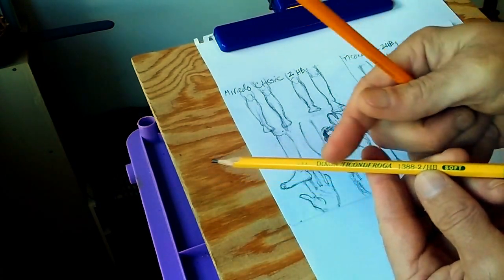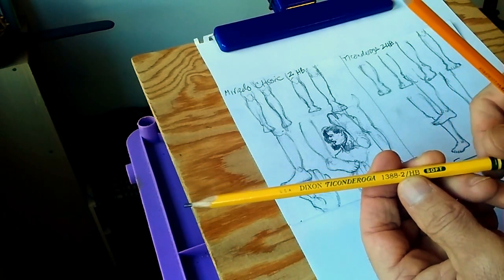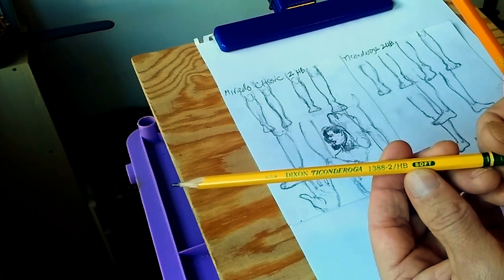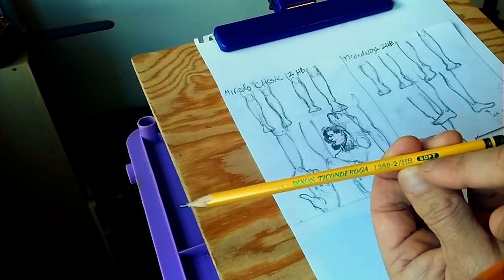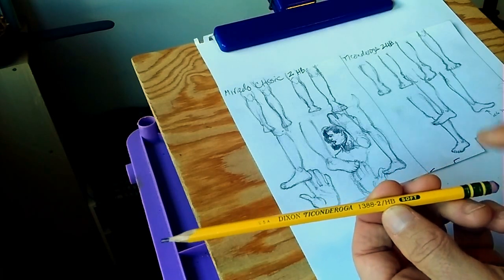Dixon does come in some other varieties, like a hard and a medium. They're much harder to get in stores like Walmart and stuff. Most often you're going to see the 2 HB Soft. I would like to check out the medium at some point.